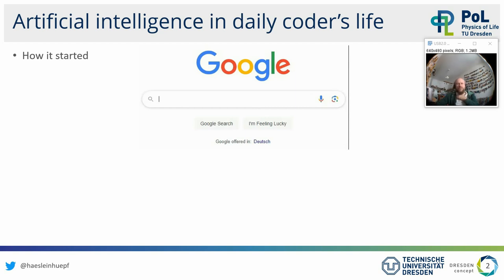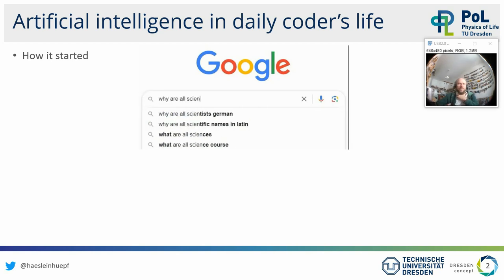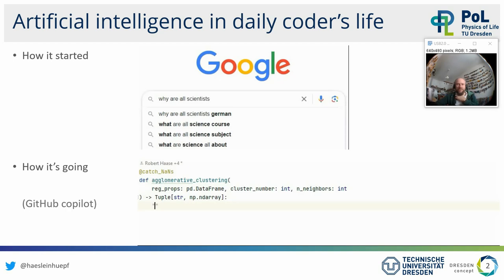We have been using Google for a couple of years. We enter terms and start typing — for example, "why are all scientists German?" Google is smart to a certain degree and can predict the next word according to some probabilities. This is a form of artificial intelligence predicting the next word, and this technology has evolved quite a lot in recent years.